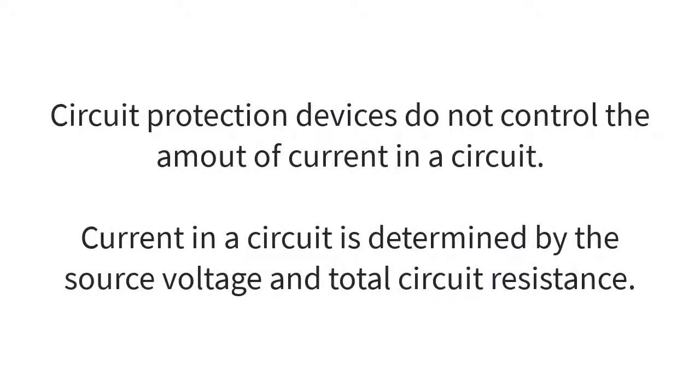Don't forget that a circuit protection device does not control the current in the circuit. If you put in a 20 amp fuse it does not control the current down to 20 amps. The current in the circuit is determined by the source voltage and the circuit's total resistance as we covered in Ohm's law back in video 3. Also note that I've got an entire video, video 9 of this series, dedicated to circuit protection.